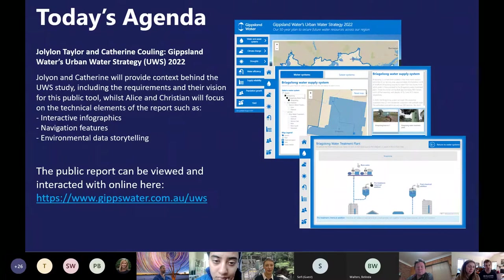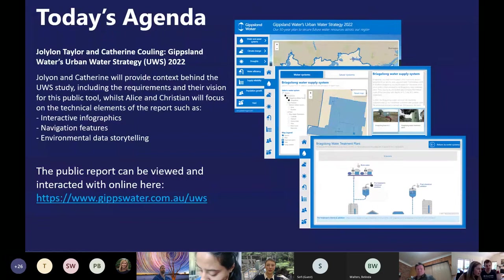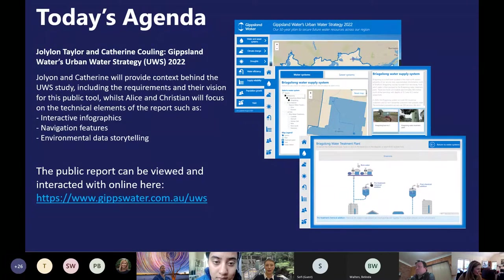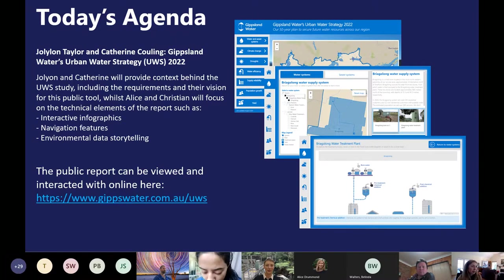Alice and I will focus on some of the technical elements. This report is publicly available on Gippsland Water's website, so you can access it there — Christian will post the link in the chat. With that, I'll hand it over to Catherine and Jollian to share about the vision and talk us through what exactly is an urban water strategy and how they're using this tool for community consultation and engagement.